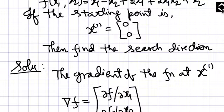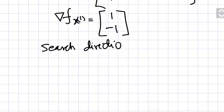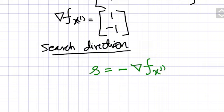Now you have to find the search direction. How you will find the search direction? There is a particular formula for that. If you are writing the search direction this way, then the formula is that you take the opposite sign of the gradient of the function at that point. So this is the formula.